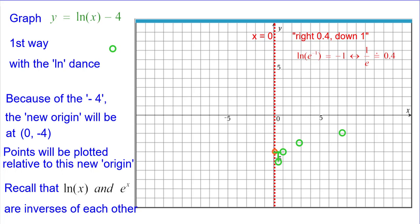Right 0.4 down 1. The natural log of the reciprocal of e is negative 1 and the reciprocal of e is about 0.37.